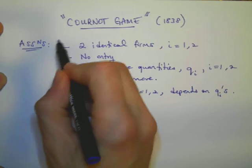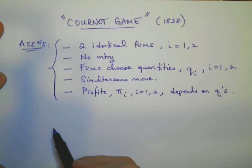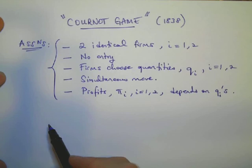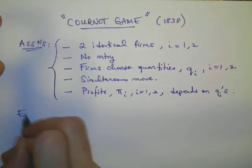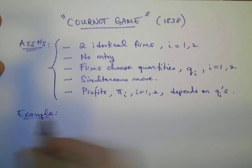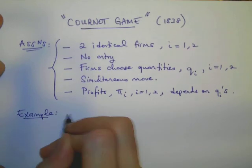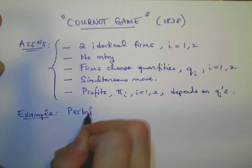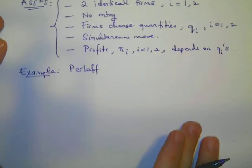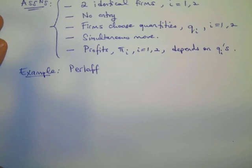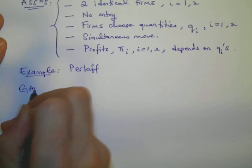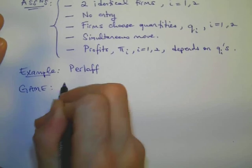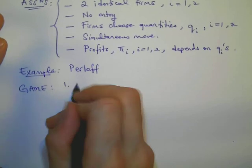With these assumptions, Cournot was able to solve this game. We will provide the Nash equilibrium solution to this game based on an example provided by Perloff, which has a nice microeconomics textbook. So this example that I will show now is based on the textbook Perloff.